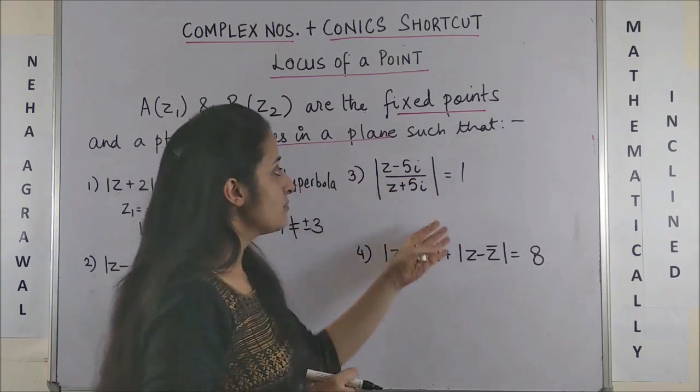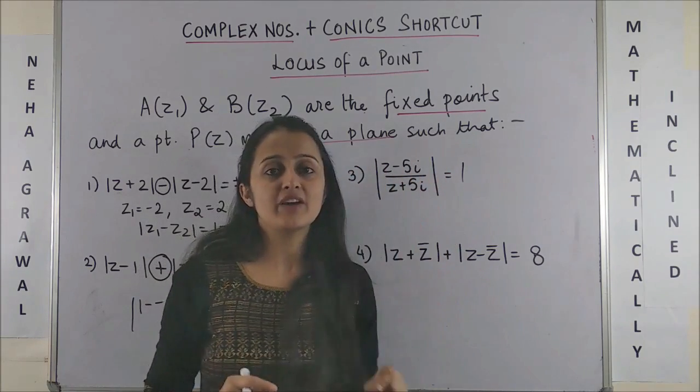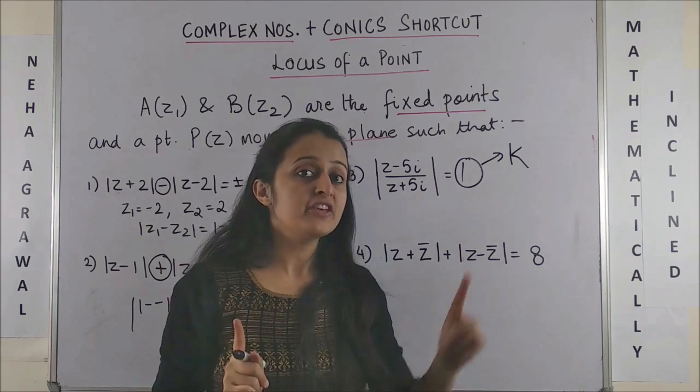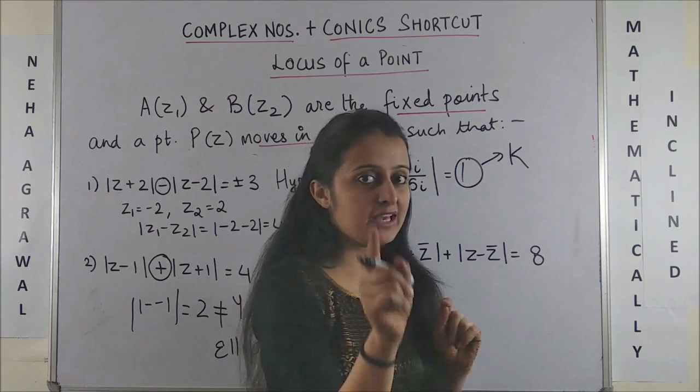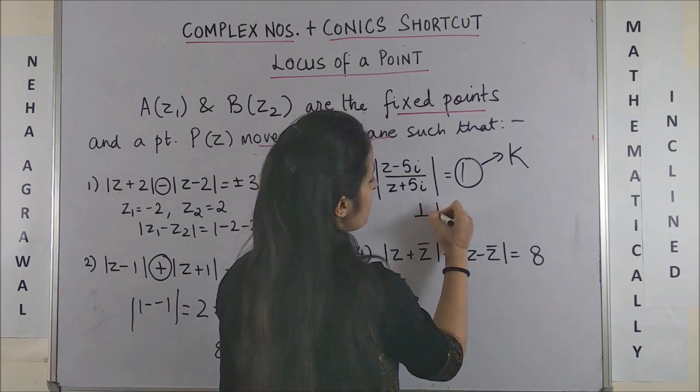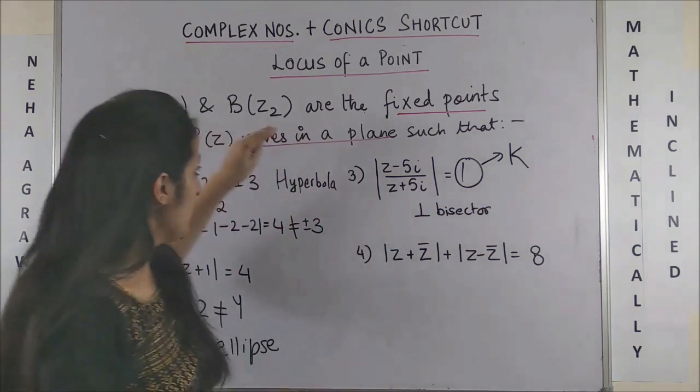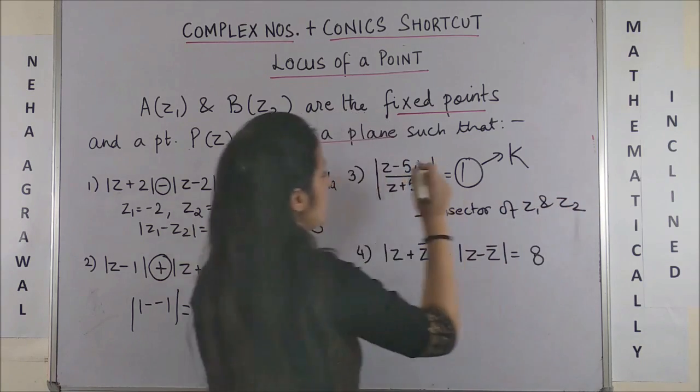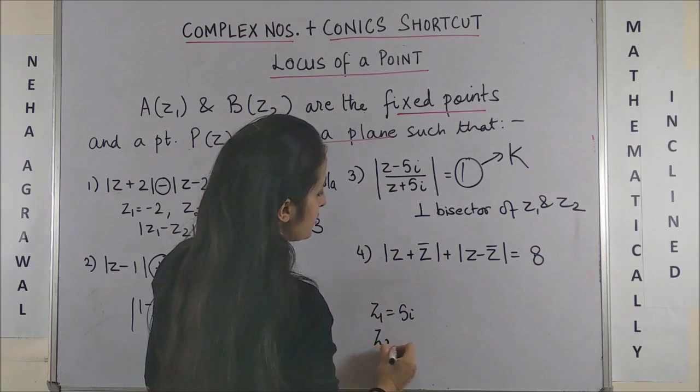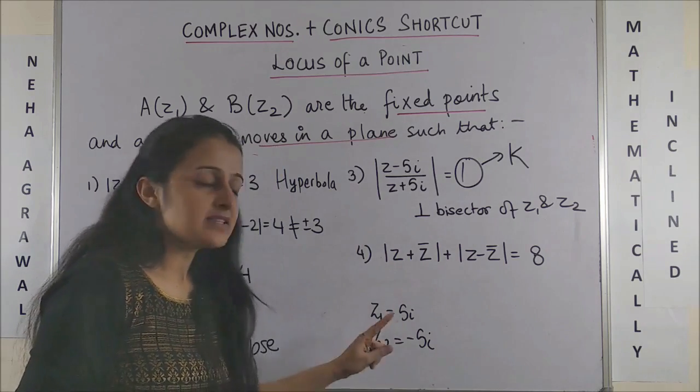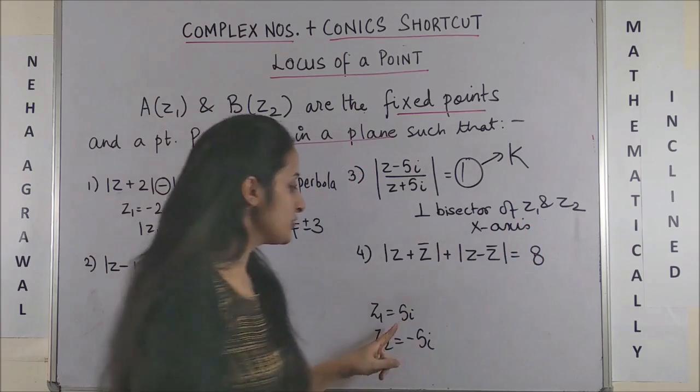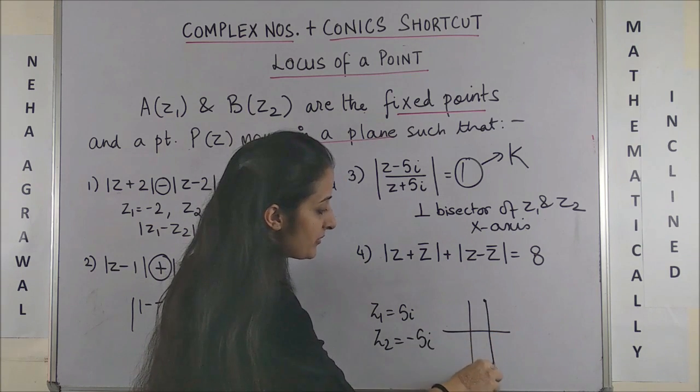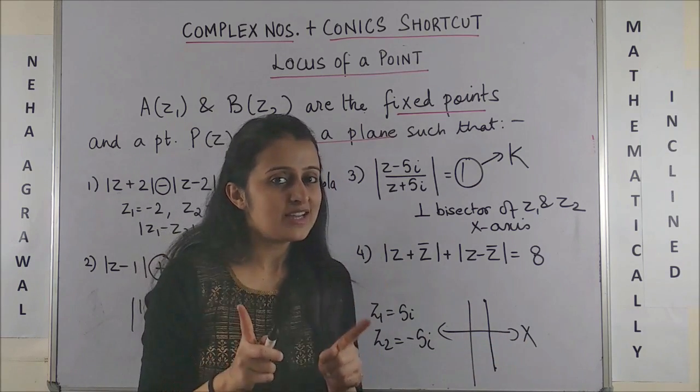Now look at the third question. You are given |z-5i|/|z+5i| = 1. As you can clearly see, my K has been given as 1. If you remember, if K was not equal to 1, the answer was a circle, but if K is equal to 1, in this case, the answer would be the perpendicular bisector. Basically, your locus P would lie on the perpendicular bisector of Z₁ and Z₂. My Z₁ is 5i here and Z₂ is -5i. Their perpendicular bisector technically turns out to be the x-axis. Why? Because if you try plotting these on the plane, -5 is somewhere here, 5 is somewhere here, so their perpendicular bisector is simply your x-axis. Wasn't that so quick and easy?